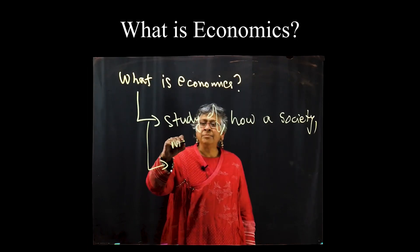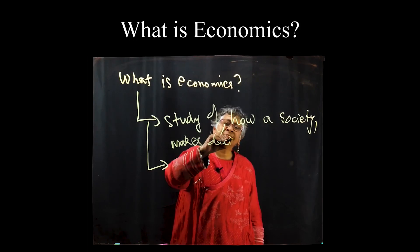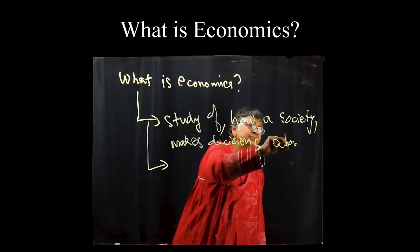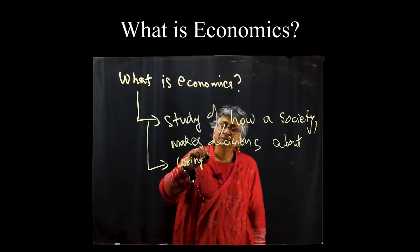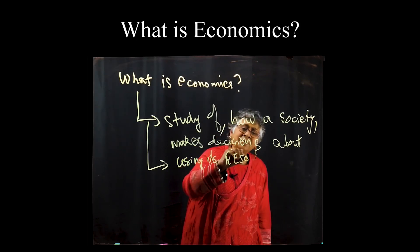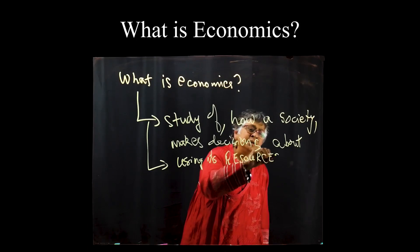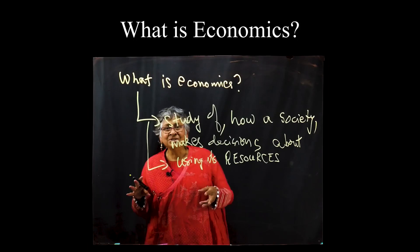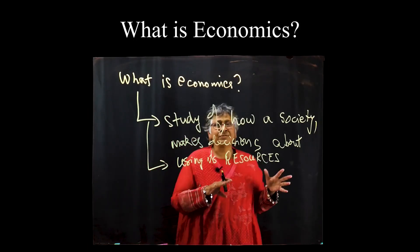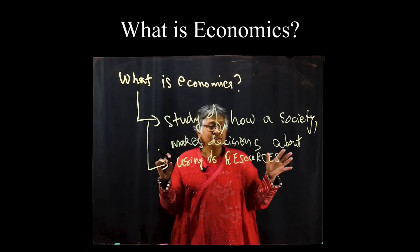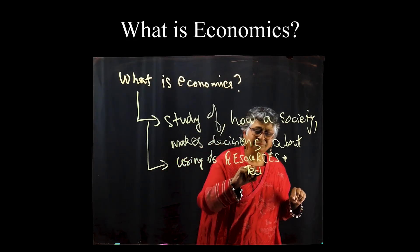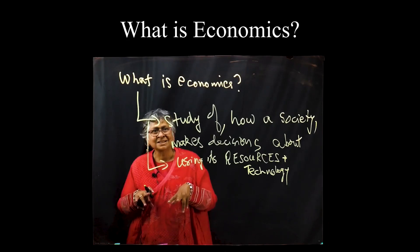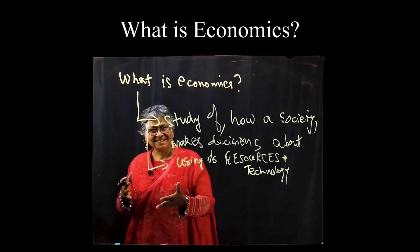How a society makes decisions — we are really looking at the decision-making process about using its resources. We're going to learn a lot about resources, because your resources can be land, labor, natural minerals, technology, the skill level of the people who work with you, it can be high-tech. So you have resources and technology. Technology for us is just: given your knowledge base, how do you combine your resources to get your end result?